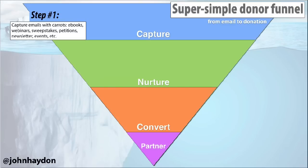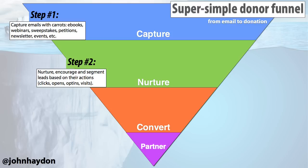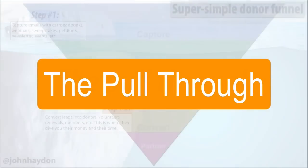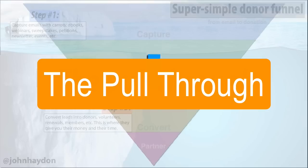Step one, you capture their email. Then with email, what you're doing is nurturing activity — nurturing their interest and segmenting out people based on their interest, then targeting messages to those people. Finally, you will convert a very small group of these people into donors, volunteers, renewals, members — whatever you want to call them. You're pulling someone through the funnel. That's what your marketing effort is — grabbing someone at the top end of the funnel and pulling them in.